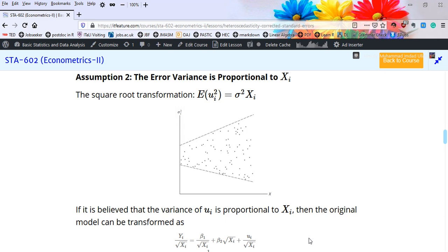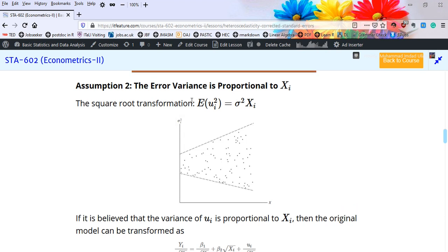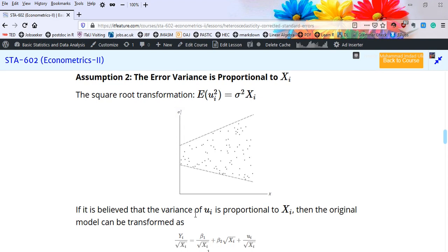For remedy of heteroscedasticity, the second assumption states that the error variance is proportional to X_i. Statistically, the expected value of u_i squared is equal to sigma squared X_i. The variance of u_i is proportional to X_i.